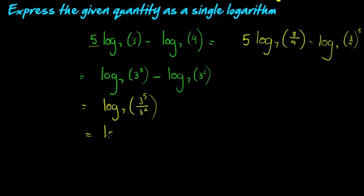5 factors of 3 divided by 2 factors of 3 leaves me with only 3 factors of 3. So this is 3 to the power of 3, which is 27.